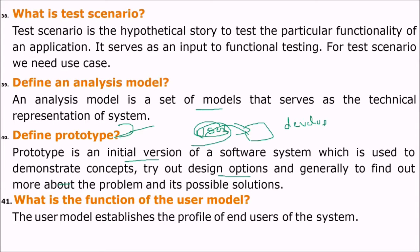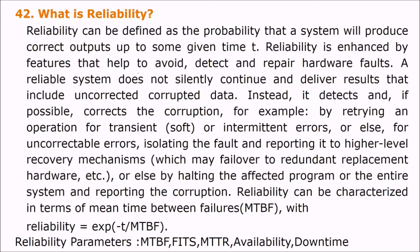What is the function of the user model? The user model establishes the profile of end users of the system. What is reliability? Reliability is the probability that a system will produce correct outputs up to some given time t. Reliability is enhanced by features that help avoid, detect, and repair hardware faults. A reliable system detects and, if possible, corrects data corruption — or else isolates the fault and reports it to higher-level mechanisms, which may fail over to redundant hardware or halt the affected program.